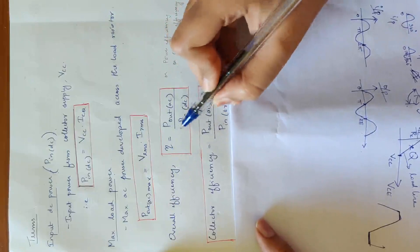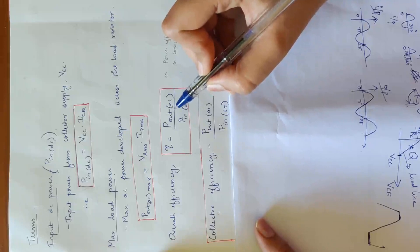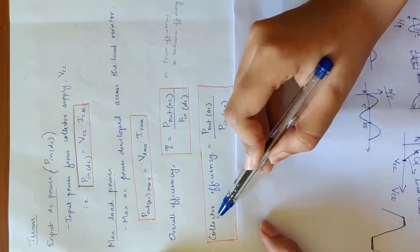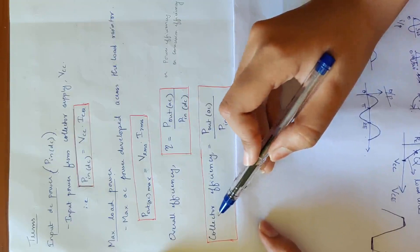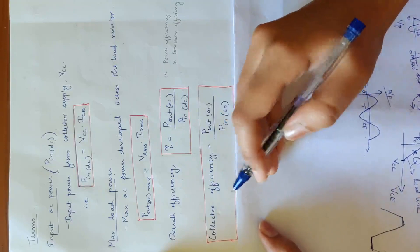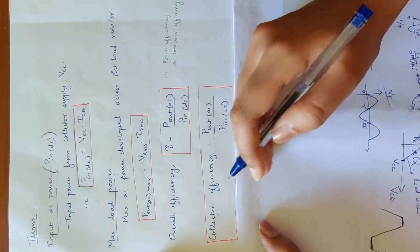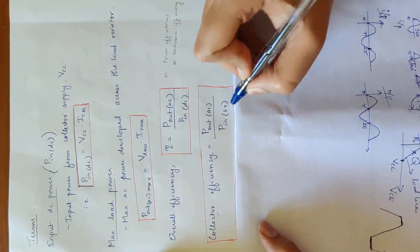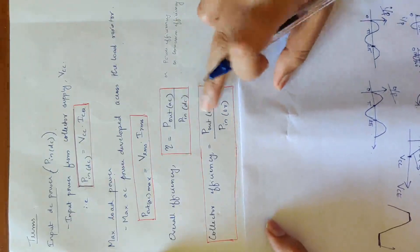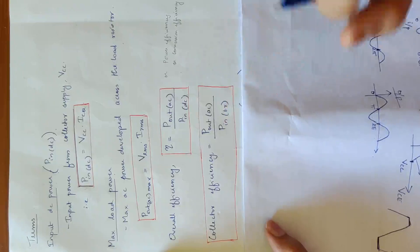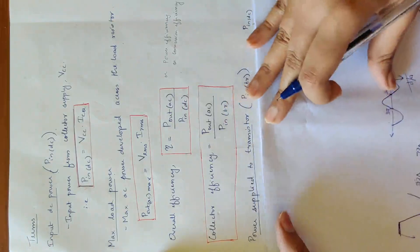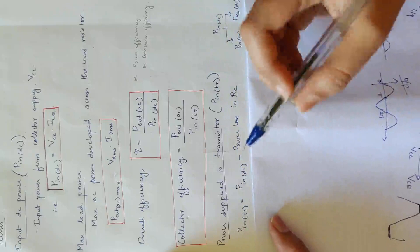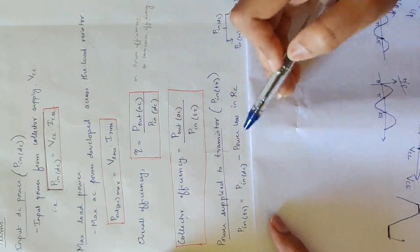AC output power converted — that is the overall efficiency. Collector efficiency refers to the transistor: input DC power is converted to output AC power. Collector efficiency equals output AC power divided by input transistor power, P_IN_TR.